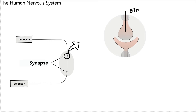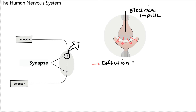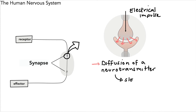An electrical impulse arrives at a synapse — for example, from the sensory neuron to the relay neuron. It will then pass across the gap in the synapse via the diffusion of a chemical called a neurotransmitter. This chemical diffuses across that gap, and once it does, the impulse will continue as an electrical impulse. The diffusion of a neurotransmitter is slower than an electrical impulse, so the sending of the impulse is slowed down slightly by going across the synapse.